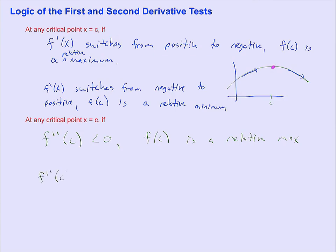If the second derivative of c is positive, f of c is a relative minimum,